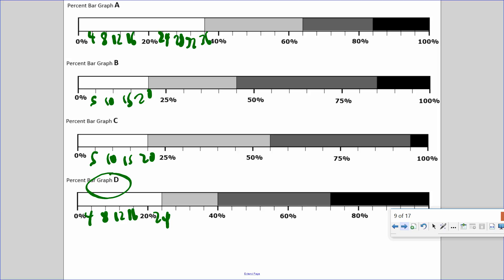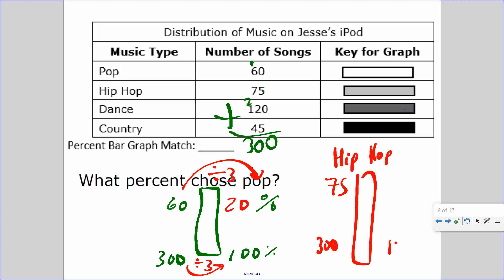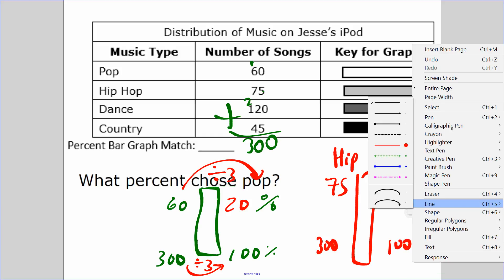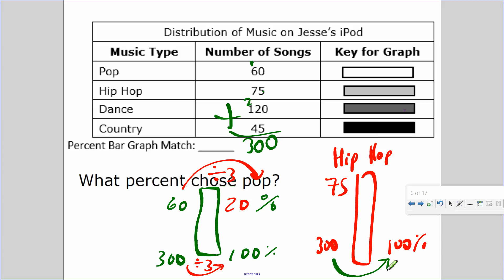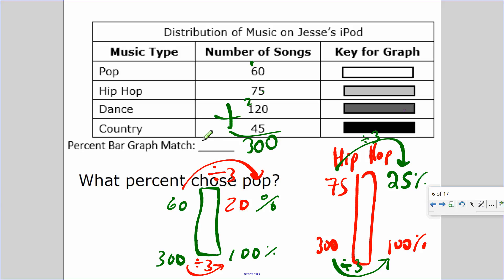20% chose pop, which is the white bar. Oh, it's either B or C. We can do the hip hop thing. So, what percent is hip hop? That's 75 out of 300. What is the relationship from 300 to 100%? Divide by 3. 75 divided by 3 is 25% chose hip hop. So we know it's B or C. 20% chose pop, 25% chose hip hop. Looking at the options, it must be B. So this percent bar graph matches B.